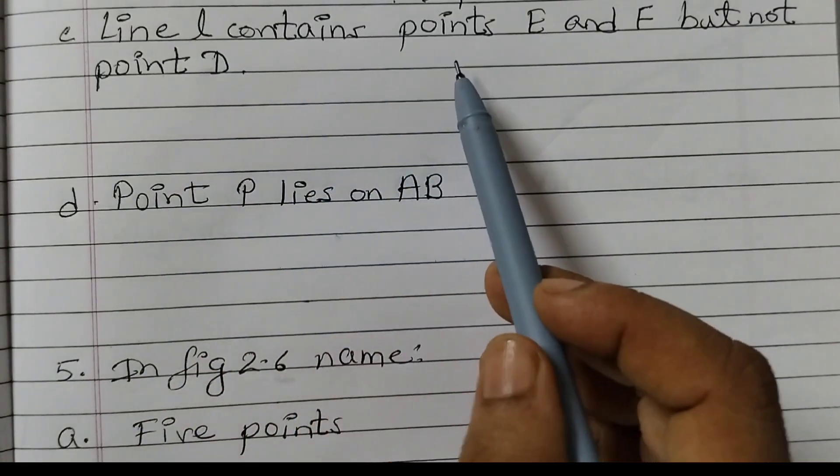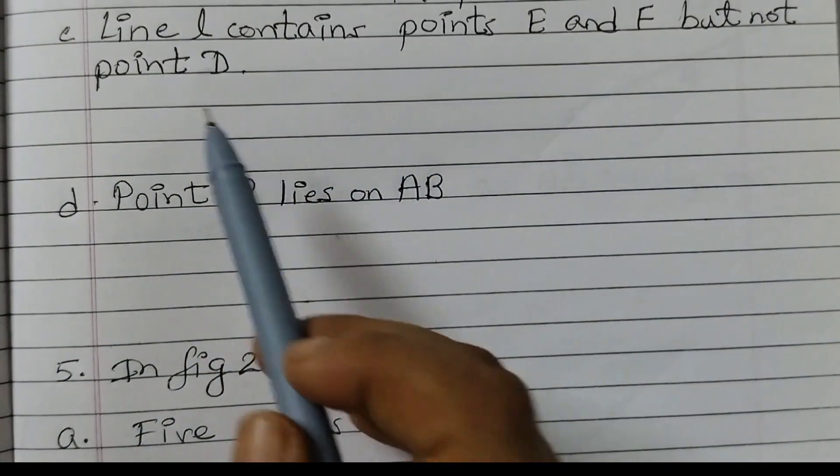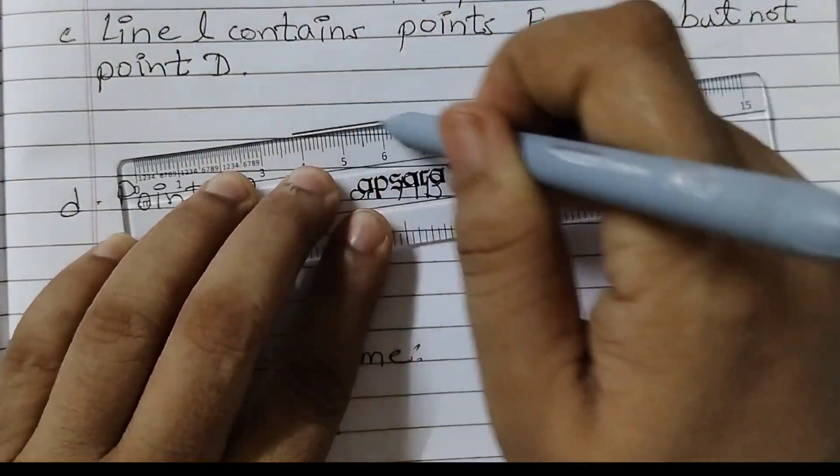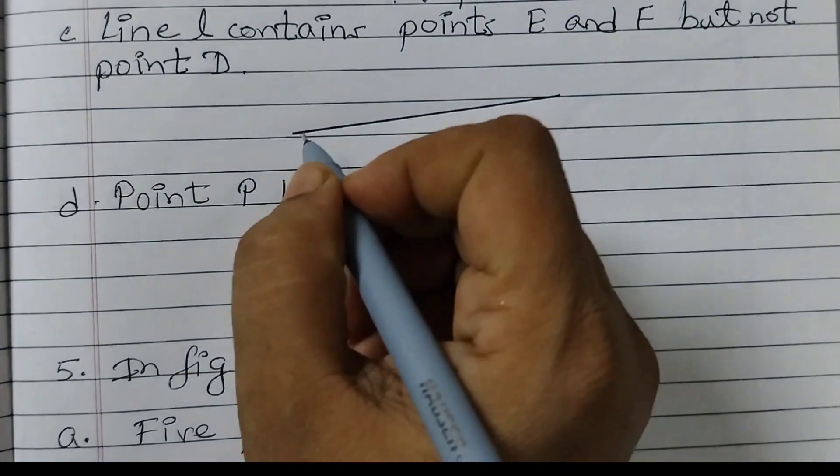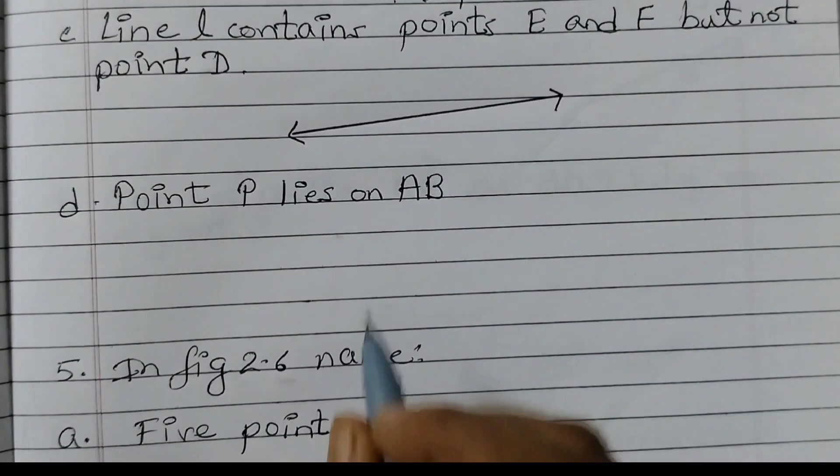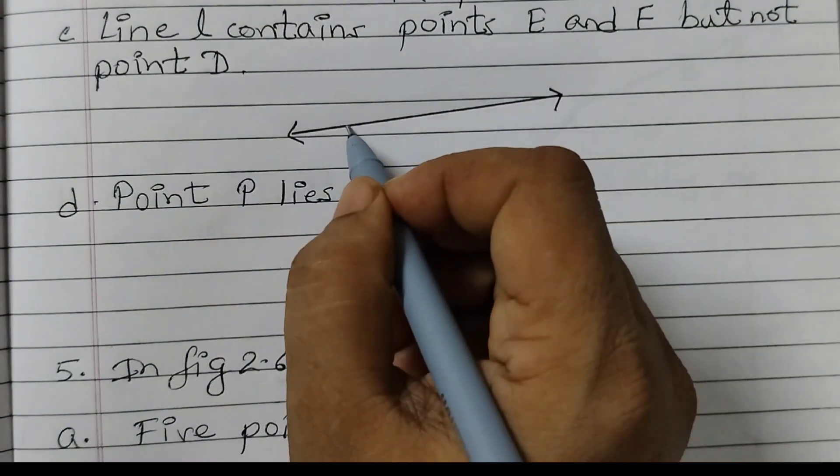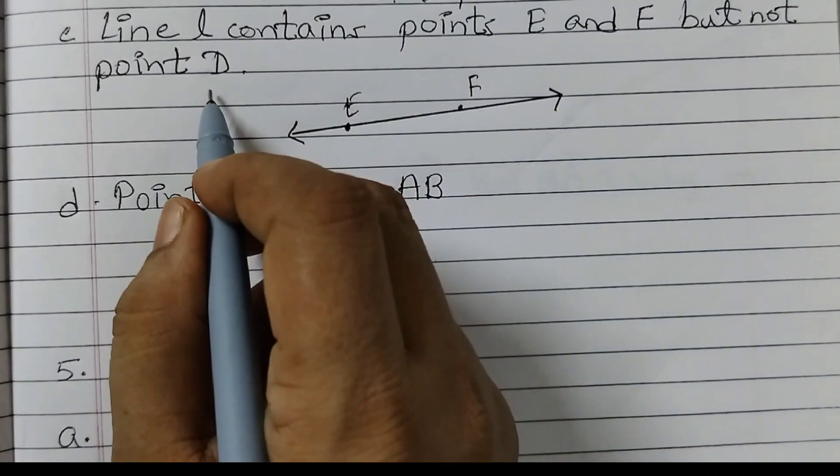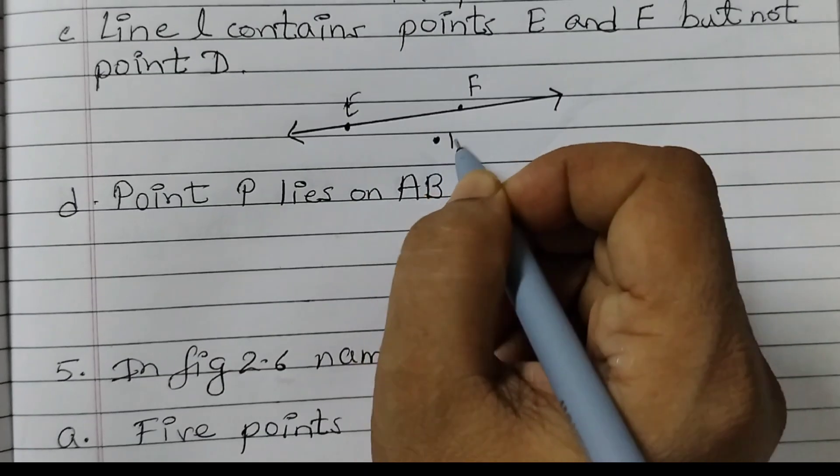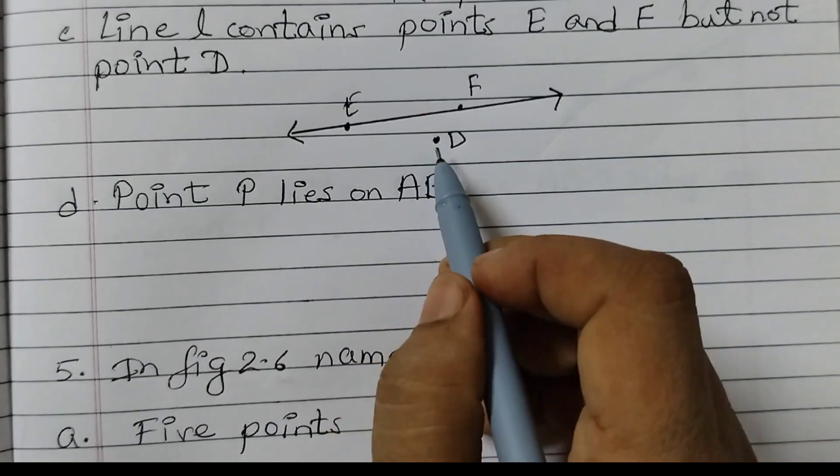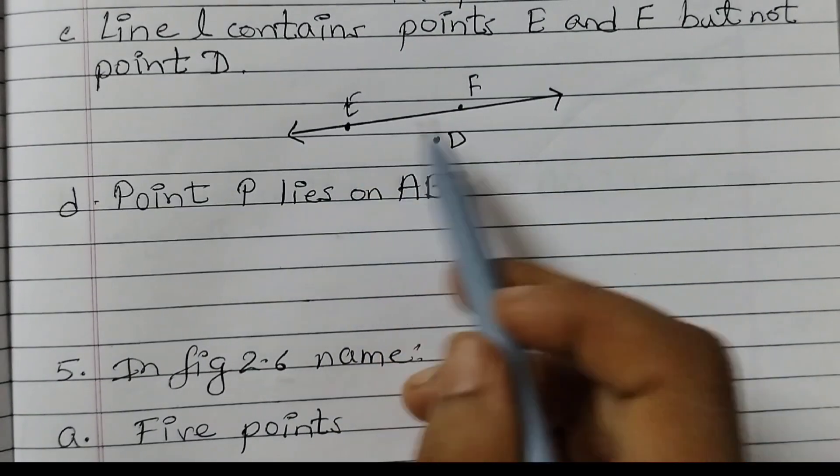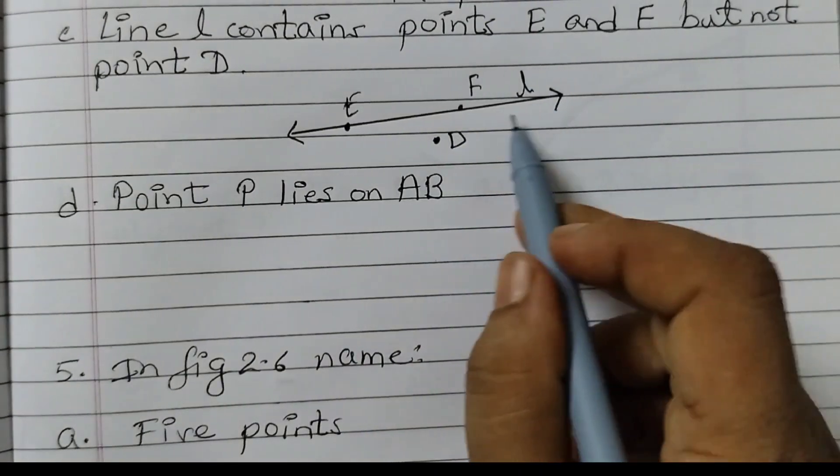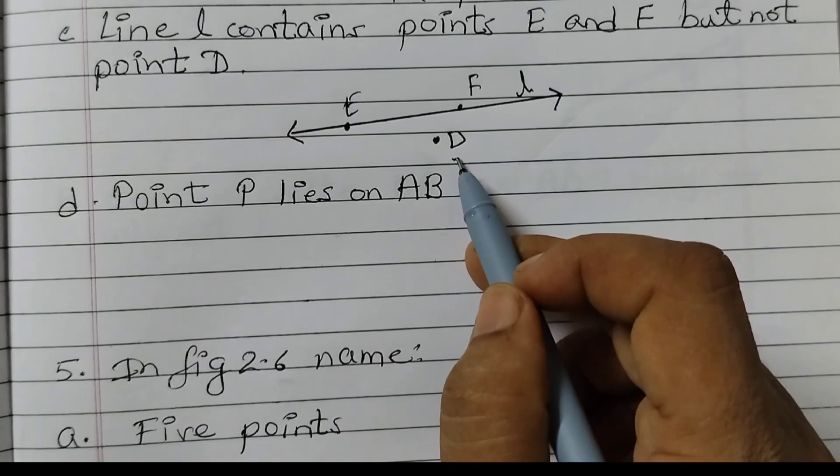See line L contains points E and F but not point D. So first we will draw a line L. So the rule is we draw like this. Put the arrow heads. So now this is a line. E and F on this line. So E, F and D is not on this line. So you can put D somewhere here. Anywhere you can put. I am putting it here. So E, F. Point E, F are on the line L. This is small l and D is not on the line.